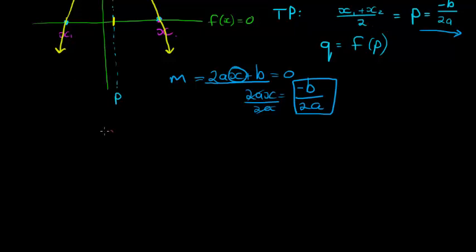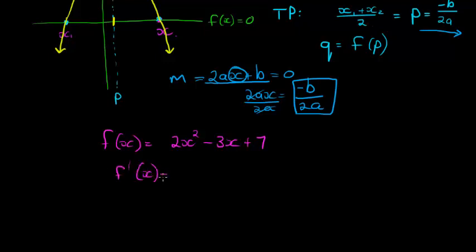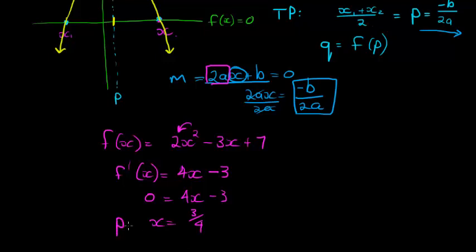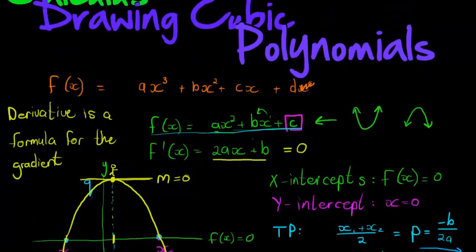For example, given f(x) = 2x² − 3x + 7, to find the turning point we take the derivative: 4x − 3. Setting that equal to zero and solving gives x = 3/4. That is the symmetry line P. To find the y-coordinate Q, we substitute 3/4 into the original function. I won't go through that calculation now because I want to get to cubic polynomials.